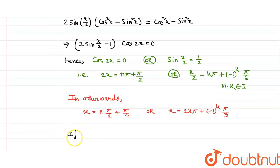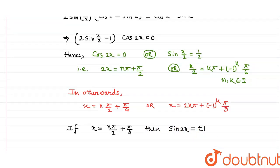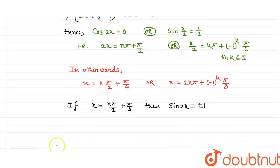If x equals nπ/2 plus π/4, then sin 2x equals ±1.